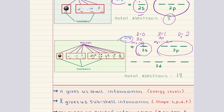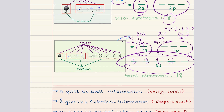Then when l is equal to two, we have our 3d subshell. Our ml values can be negative two, negative one, zero, one, or two — that's five values of ml — which tells us there are five orbitals in our 3d subshell. Each orbital can house two electrons with opposite spins. So we have our 3s subshell with one orbital holding two electrons, our 3p subshell with three orbitals holding six electrons, and our 3d subshell with five orbitals holding up to 10 electrons. This means the third shell can accommodate up to 18 electrons.